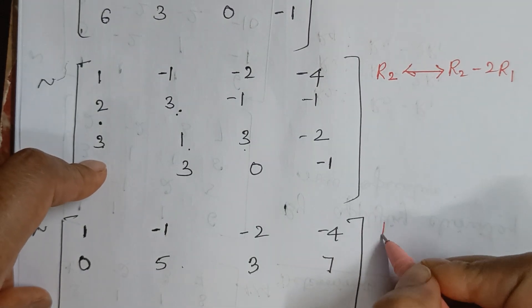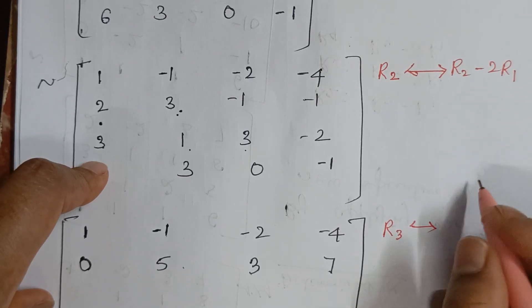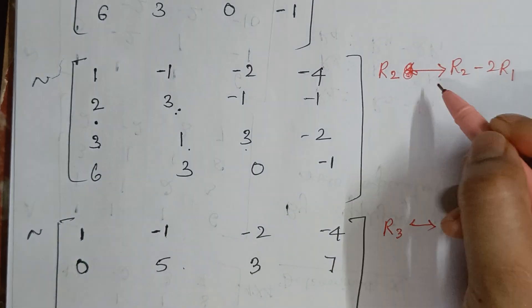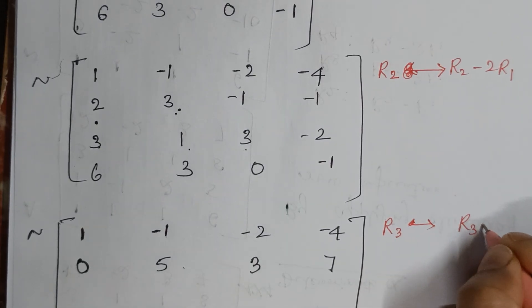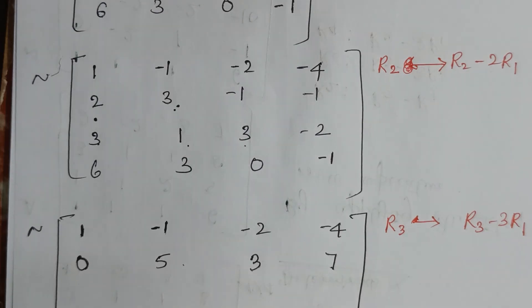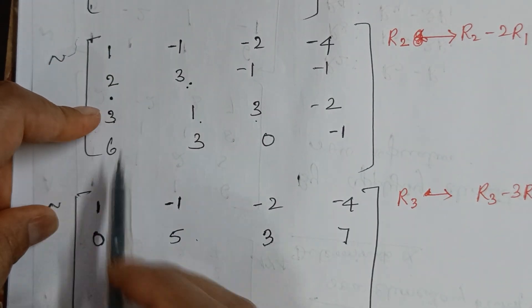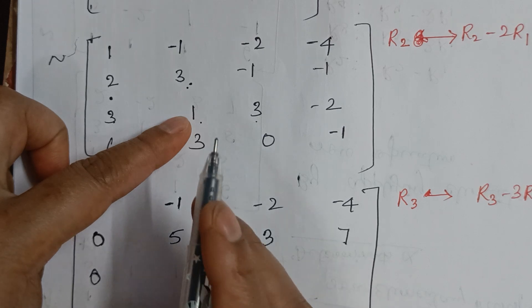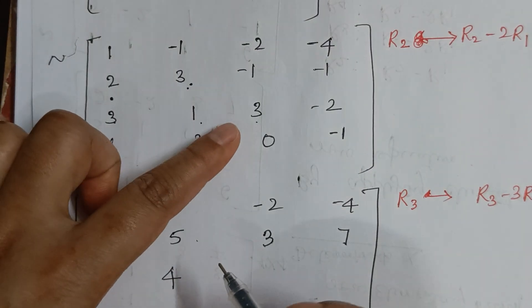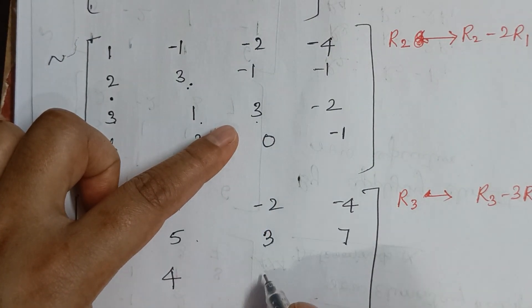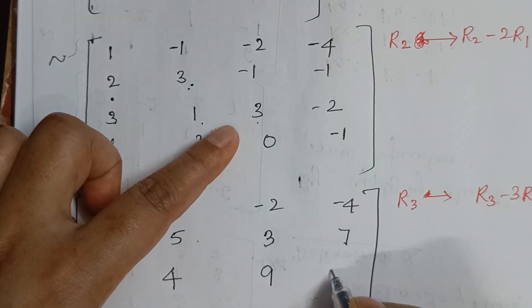For row 3, I'll perform R3 → R3 - 3R1. So: 3 - 3(1) = 0, 1 - 3(-1) = 4, 3 - 3(-2) = 9, -2 - 3(-4) = 10. Row 3 becomes: 0, 4, 9, 10.